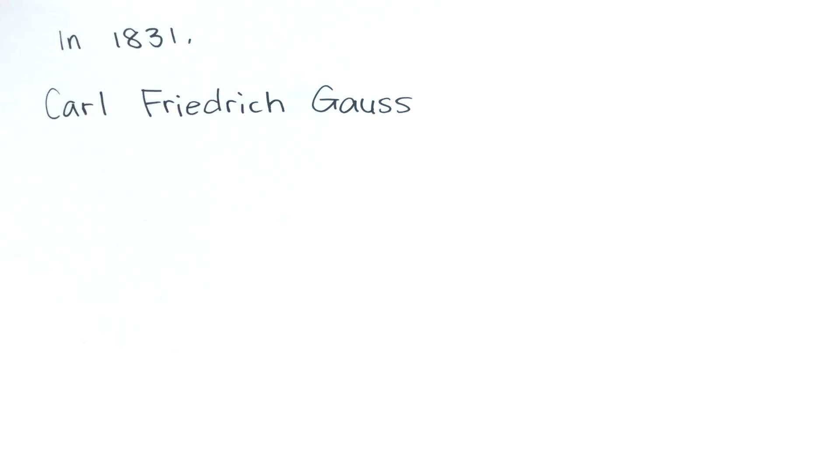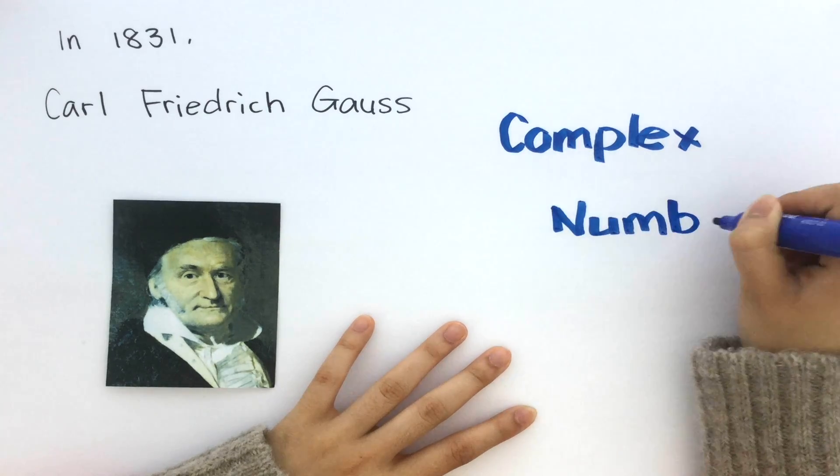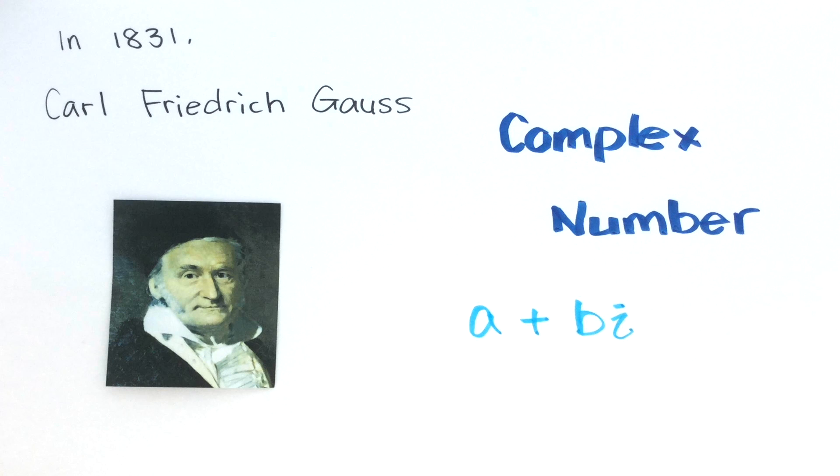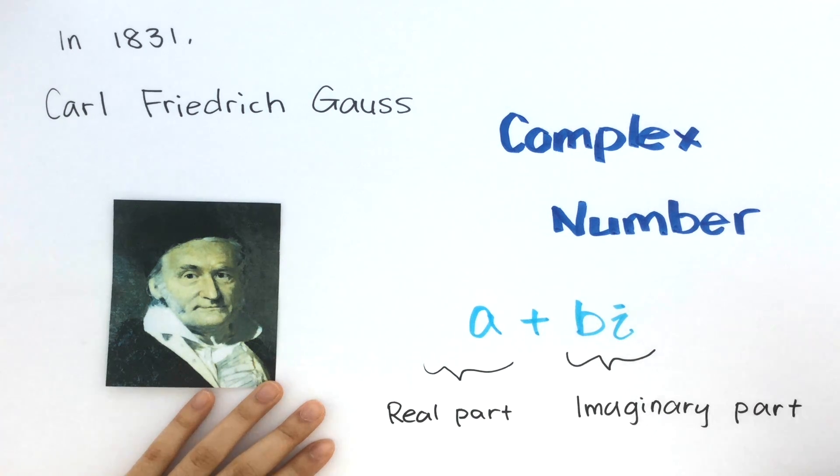In 1831, Carl Friedrich Gauss made Argon's idea popular and introduced it to many people. In addition, Gauss introduced a plus bi notation and called this a complex number. It was complex because it consisted of both real and imaginary parts.